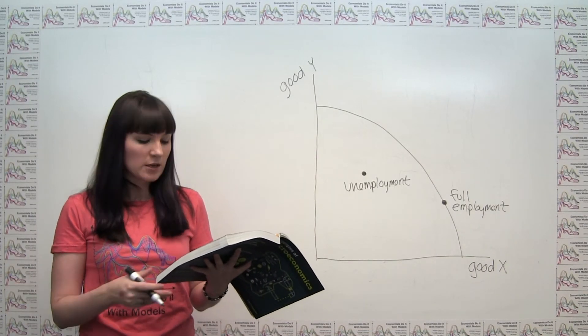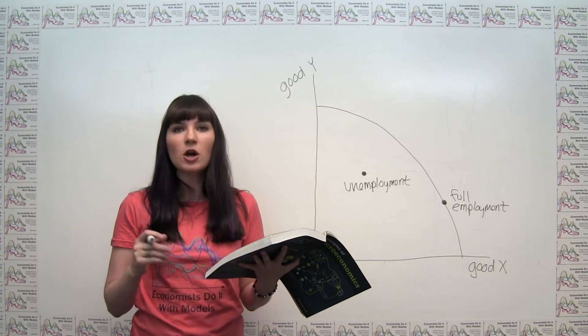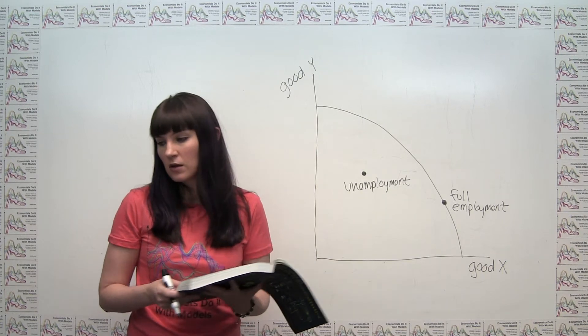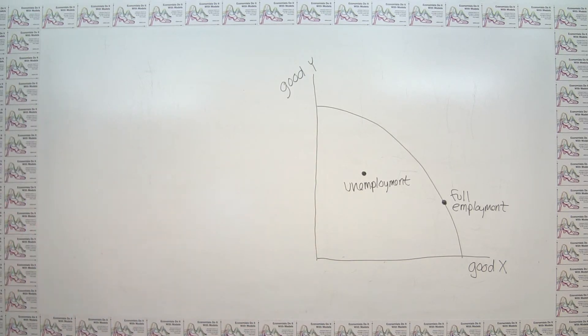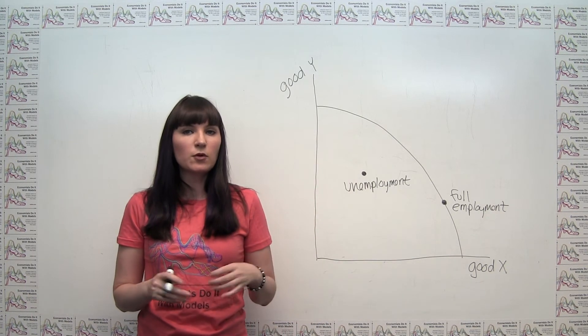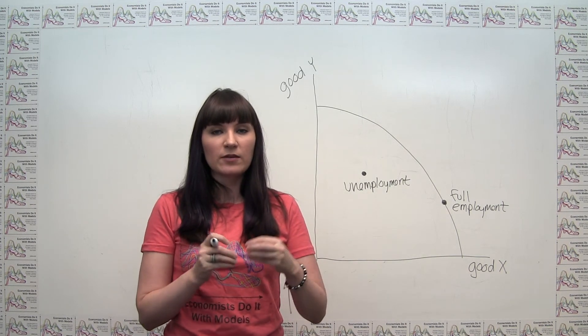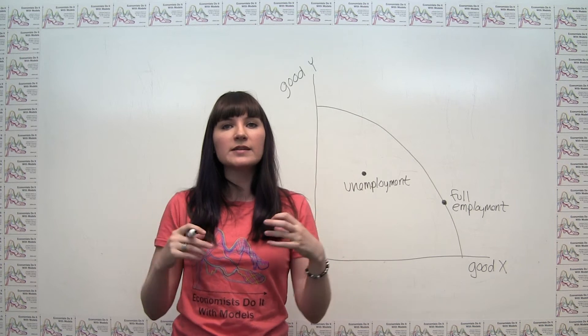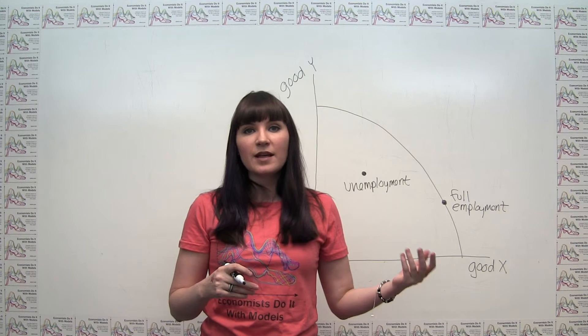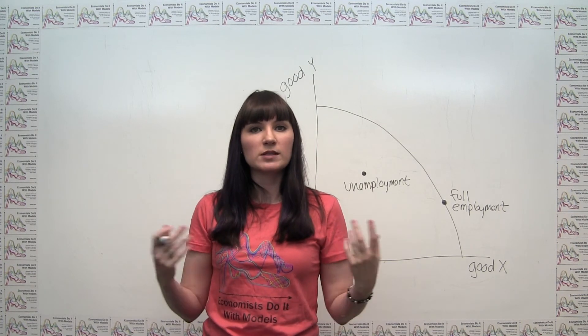Now the last part of the question asks, suppose that in a time of crisis everyone pitches in and works much harder than usual. What happens to the production possibilities frontier? So here, we can think about, what does working harder mean? If we're working harder in a useful way, working harder means that we're actually producing more output. So I, as a worker, am a given resource. If I'm working harder, then me as a resource is able to produce more than I was under normal times.